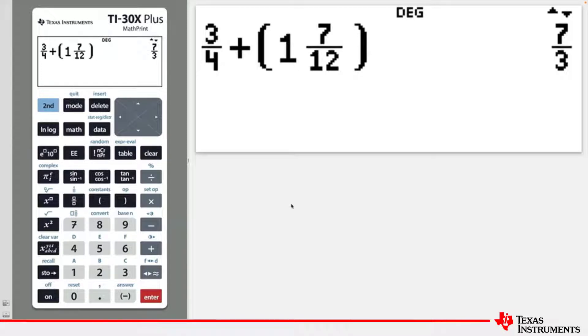In MathPrint mode, the result from a calculation involving fractions is given in the simplest proper or improper fraction format.